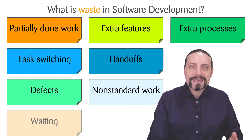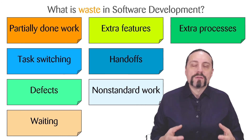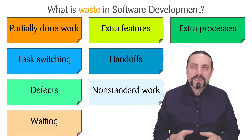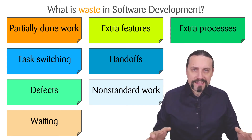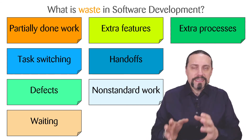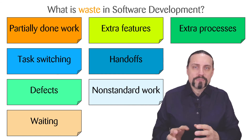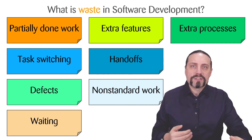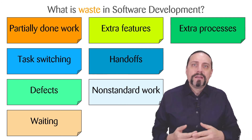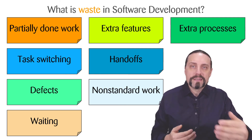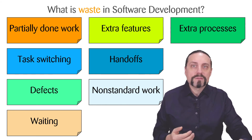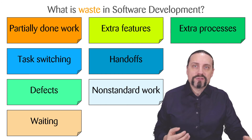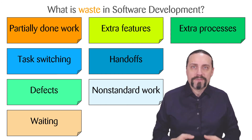Waiting or delays are also waste in software development and should be reduced. We need to constantly analyze our value chain to eliminate these waiting times. An example is waiting for the CI/CD pipeline — waiting for the build, integration, unit tests, and deployment when it takes too long, meaning we don't get fast feedback.